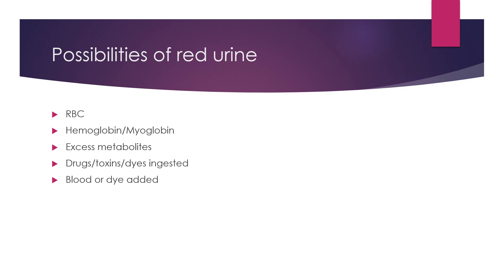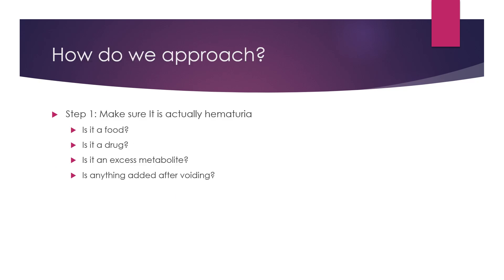If a child comes to you complaining of red urine, nobody is going to say 'I am having hematuria' — they will panic and say they have blood in urine. But you as a clinician need to know whether it is actually blood, something resembling blood, or something else altogether. You have RBCs which is actual hematuria, it can be hemoglobinuria or myoglobinuria, it can be excess metabolites, drugs, toxins, dyes, or something added after the urine has been passed — as in Munchausen syndrome by proxy.